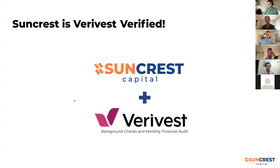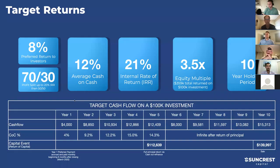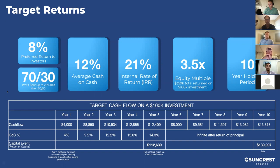Essentially what Verivest reports on is whether our sponsors are actually doing what they say they're doing. So that's a really cool thing we just started doing. Now going into the portfolio - we have an 8% preferred return. This means before anyone else can get paid, whether it's us as sponsors or other investors, the investors in the deal have to get that 8% preferred return first.